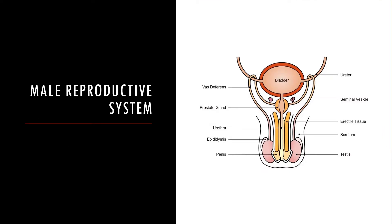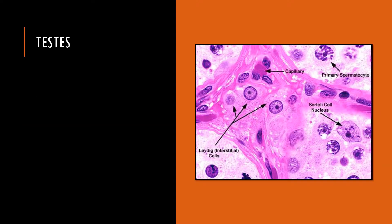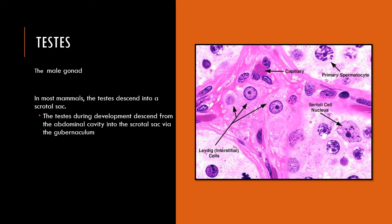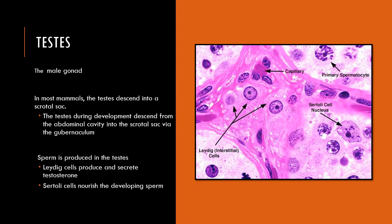The urethra is where waste is expelled from the body. Now we're going to move into the genital systems, beginning with the male reproductive system. Beginning with the male gonad, also known as the testes — the testes begin in the abdominal cavity. A tissue called a gubernaculum connects to the testes and pulls them through the abdominal cavity so they descend into the scrotal sac.